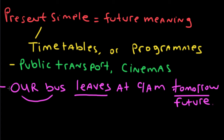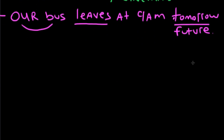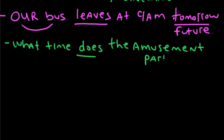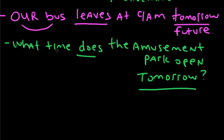Easy right? Let's look at another example. What time does the amusement park open tomorrow? Tomorrow is the future, and we use the verb 'does' in the present simple to talk about a timetable — when it will open.